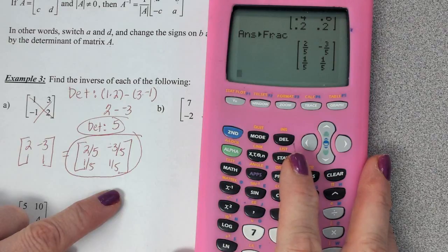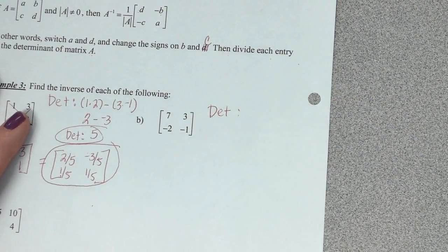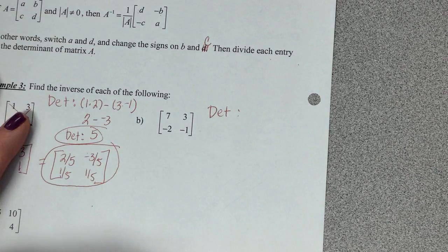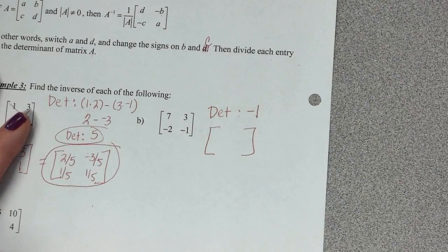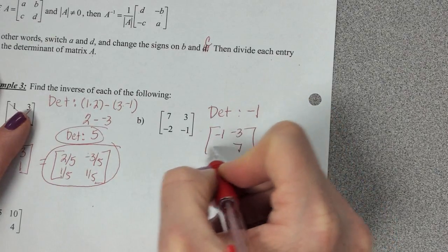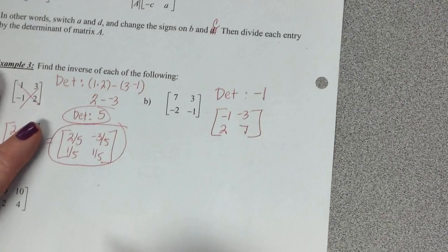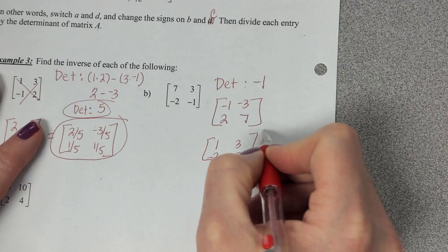Let's do the next one. Everybody find the determinant on your own first. Ben, what did you get? Negative 1 is the determinant. What do we do next? Switch these two, change those signs. And what do we do last? Divide everything by negative 1. So negative 1 divided by negative 1 changes all of our signs. And that would be the inverse.